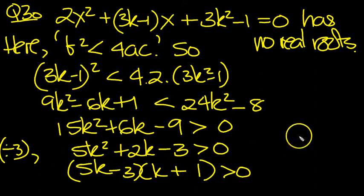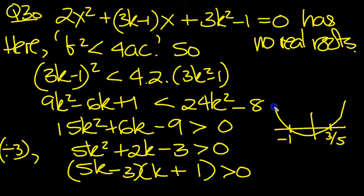This is a quadratic. The coefficient of k² is positive, so if we sketch it, it would be a u-shaped curve. It has roots at -1 and at 3/5. So we've got a u-shaped quadratic in k.